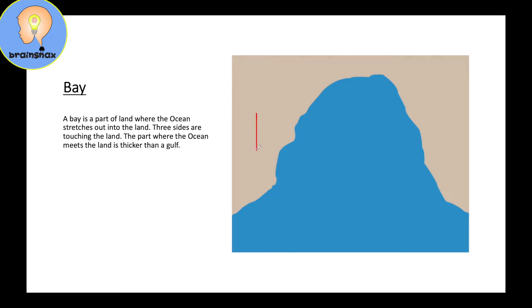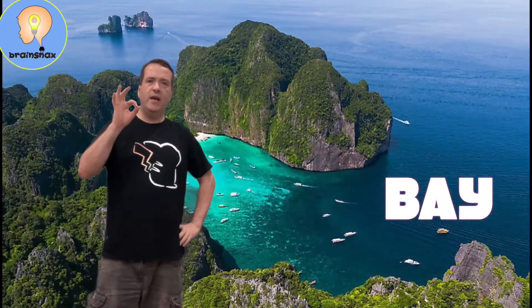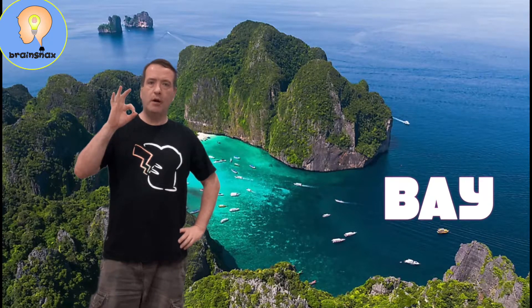Here we have one, two, three sides touching the land; this side is the ocean. And right here, it is thick. In a minute you're going to see one that is not so thick. So the first landform we're going to talk about is a bay.